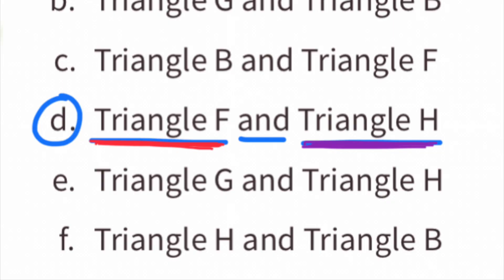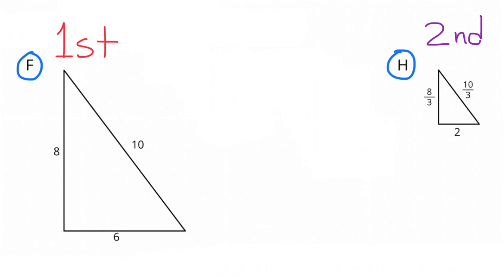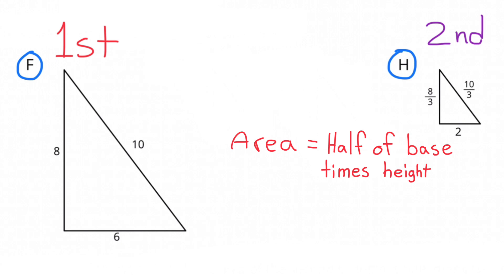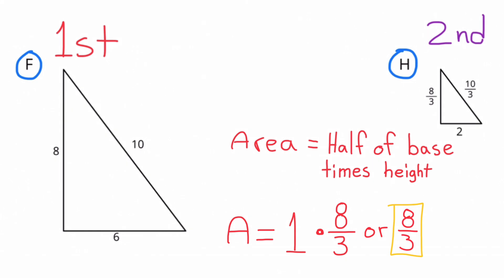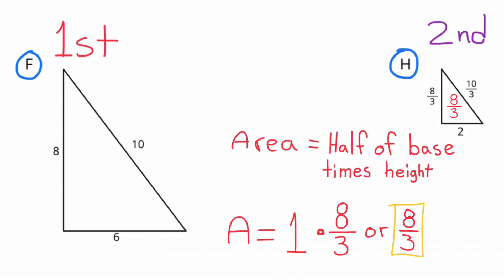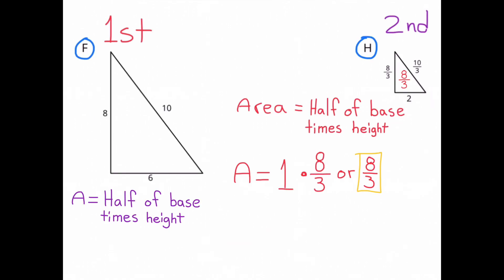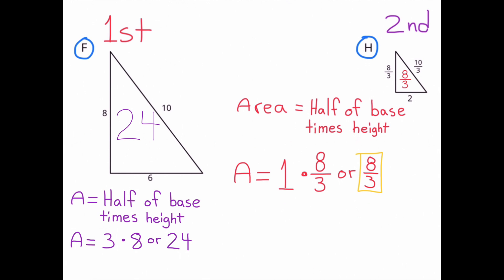Part D: triangle F and triangle H. On the left is triangle F, the first one mentioned. On the right is triangle H, the second triangle mentioned. The area for triangle H is half the base times the height. The base is 2, so half the base is 1, and 1 times 8 thirds equals 8 thirds. So the area of triangle H is 8 thirds square units. The area of triangle F is half the base times the height; half the base is 3, and 3 times 8 equals 24. The area of triangle F is 24 square units.